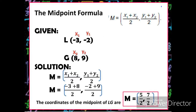We're going to apply the midpoint formula. We have the given point L, which is negative 3, negative 2, where negative 3 is X₁ and negative 2 is Y₁. And we have another point G, the second point: positive 8, positive 9, where 8 is X₂ and 9 is Y₂.